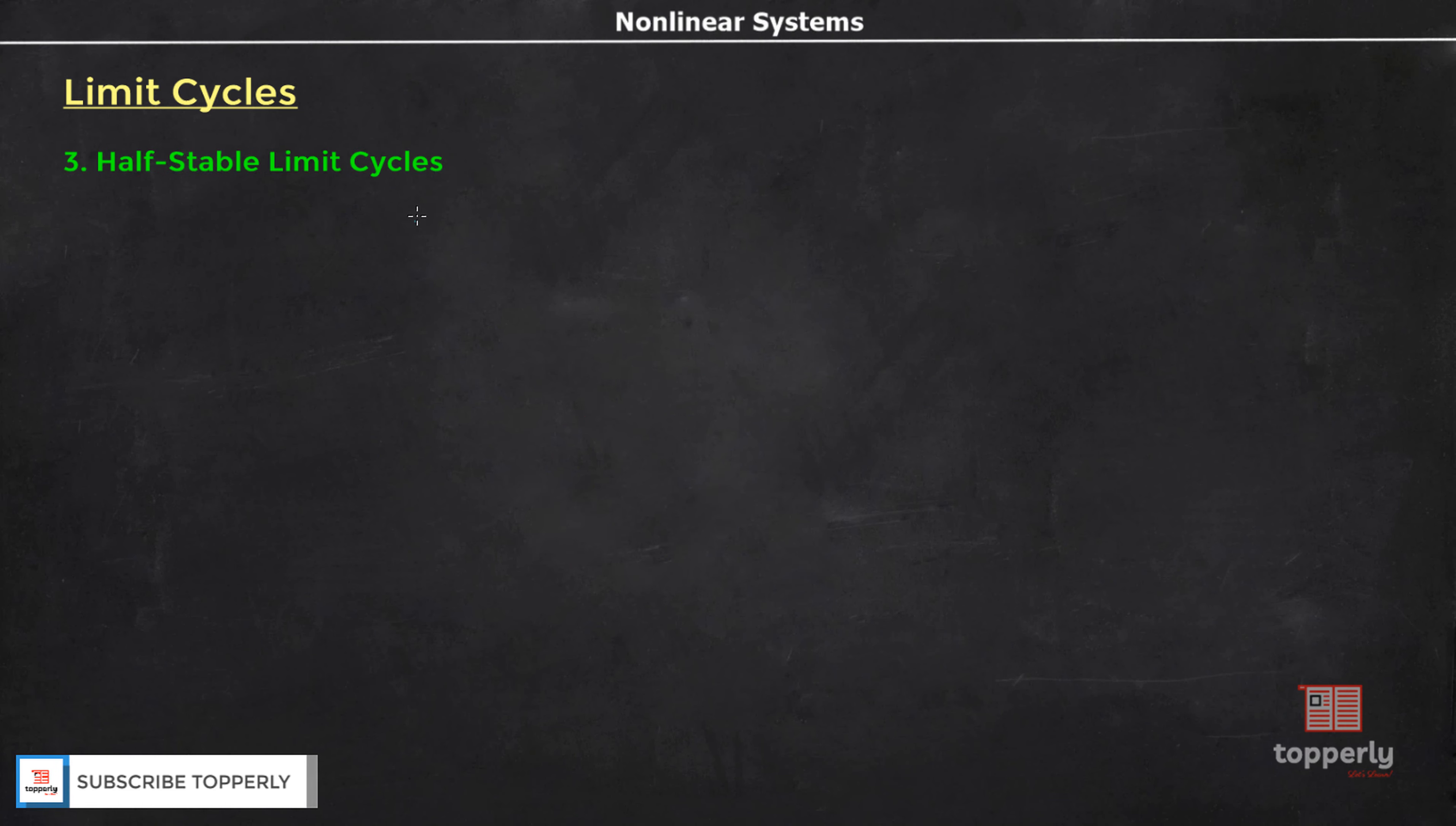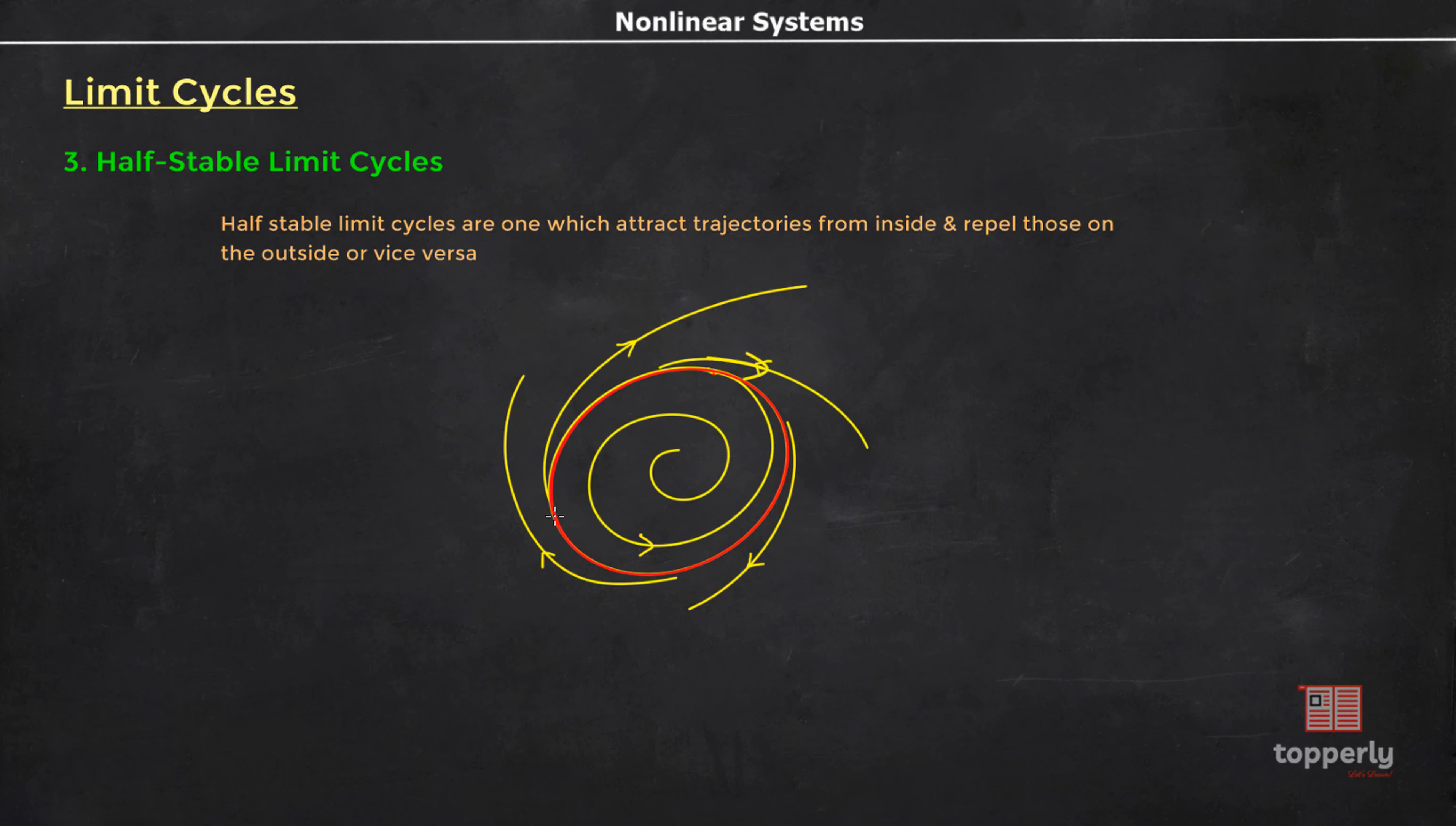Now, coming to the third case: half-stable limit cycles. Half-stable limit cycles are one which attract trajectories from inside and repel those on the outside, or vice versa. For instance, if we see this figure, all the trajectories from the outside are repelled by the limit cycle, while all the trajectories inside are attracted towards the limit cycle. The opposite case is also true. That is, the trajectories from the inside can be repelled by the limit cycle and the trajectories on the outside can be attracted by the limit cycle. In this case also, the limit cycle is called a half-stable limit cycle. If some trajectories which are sufficiently close to a cycle converge to that cycle as t goes to infinity and others diverge from that cycle, we call the cycle a half-stable or semi-stable limit cycle of the system.